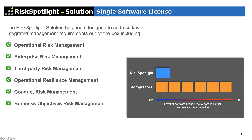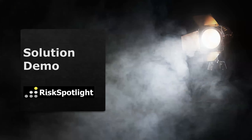With one license from Risk Spotlight, you can use the solution for operational risk, then expand it to enterprise risk management, third-party risk management, and more. Competitors sell the same software six or seven times by charging for different modules, increasing the total cost of ownership over time. Our pricing means one license covers managing all different types of risk across processes, IT systems, and business services.